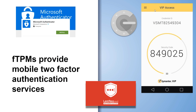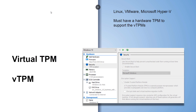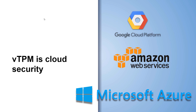fTPM provides mobile two-factor authentication services such as Google Authenticator, Symantec VIP Access, Microsoft Authenticator, LastPass Authenticator, and much more. Data center TPM technology is also crucial, based on virtual TPM in Linux, VMware, and Microsoft Hyper-V. Data centers running lots of virtual machines must have TPM to support them. Virtual TPM is a cloud security platform foundational for Google Cloud Platform, Amazon Web Services, Microsoft Azure, Rackspace, and more.